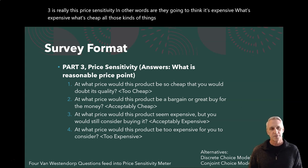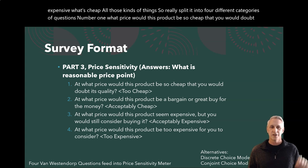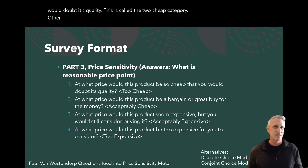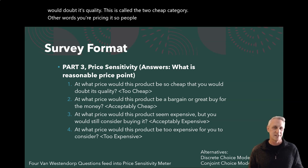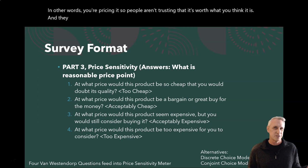You split it into four different categories of questions. Number one: at what price would this product be so cheap that you would doubt its quality? This is called the too-cheap category. In other words, you're pricing it so low that people aren't trusting that it's worth what you think it is — they think something's wrong with it, that it's too cheap, it's going to fall apart.